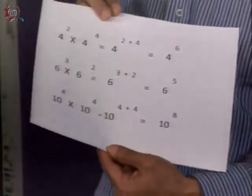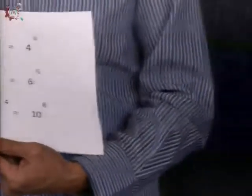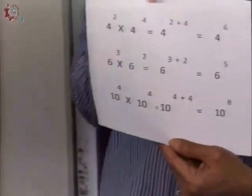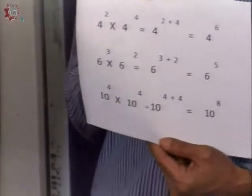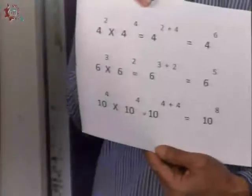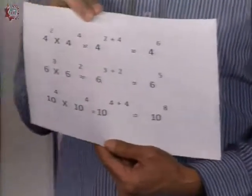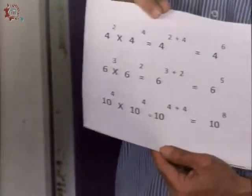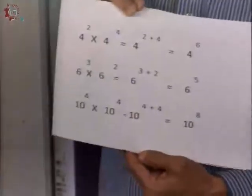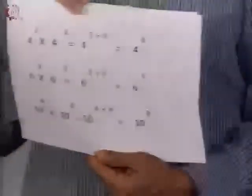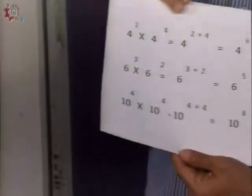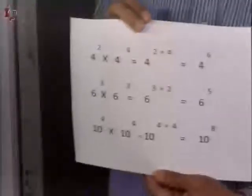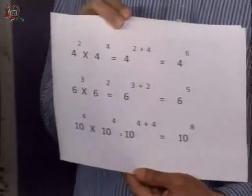En el siguiente ejemplo, seis elevado al cubo por seis elevado al cuadrado. De igual manera, sumas los exponentes, tres más dos. Recorres la base, que es seis, y el resultado es seis a la quinta potencia. El siguiente ejemplo: diez elevado a la cuarta potencia por diez elevado a la cuarta potencia. Recorres la base, que es diez, sumas los exponentes, cuatro más cuatro sería ocho. Y el resultado sería diez elevado a la octava potencia.